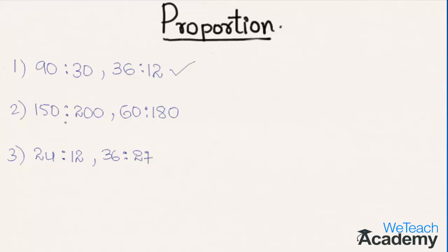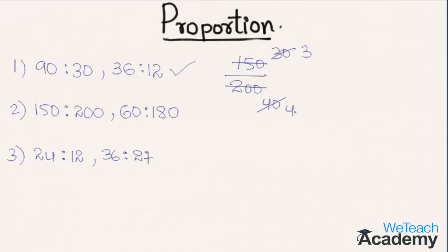Coming to the second example, the ratio 150 is to 200 can be written as 150 divided by 200. Simplifying: 5 times 30 is 150 and 5 times 40 is 200. Further simplifying, 10 times 3 is 30 and 10 times 4 is 40. So we get here 3 by 4.